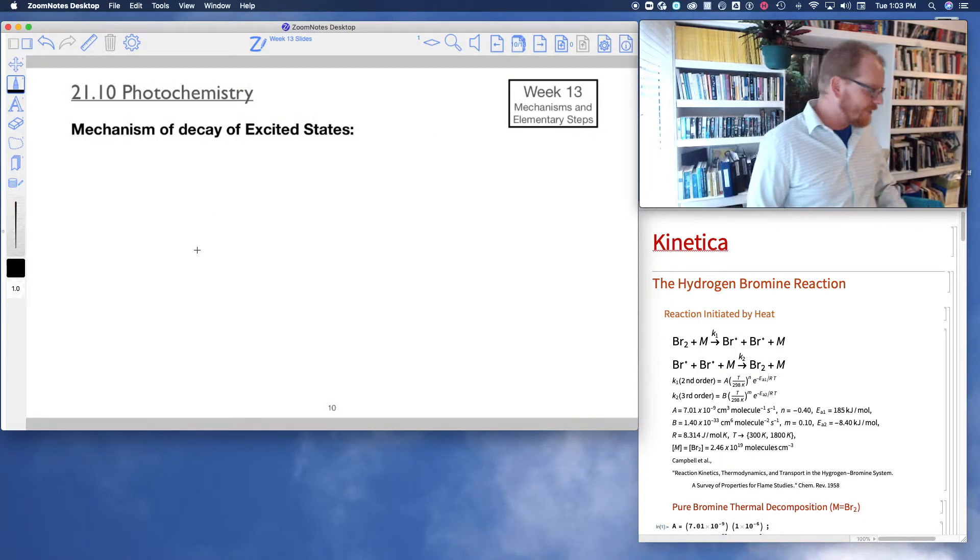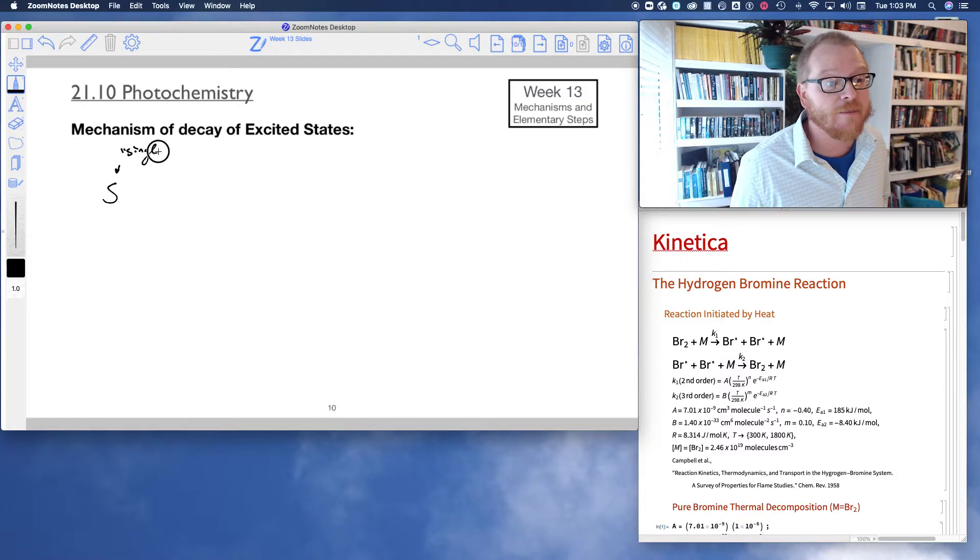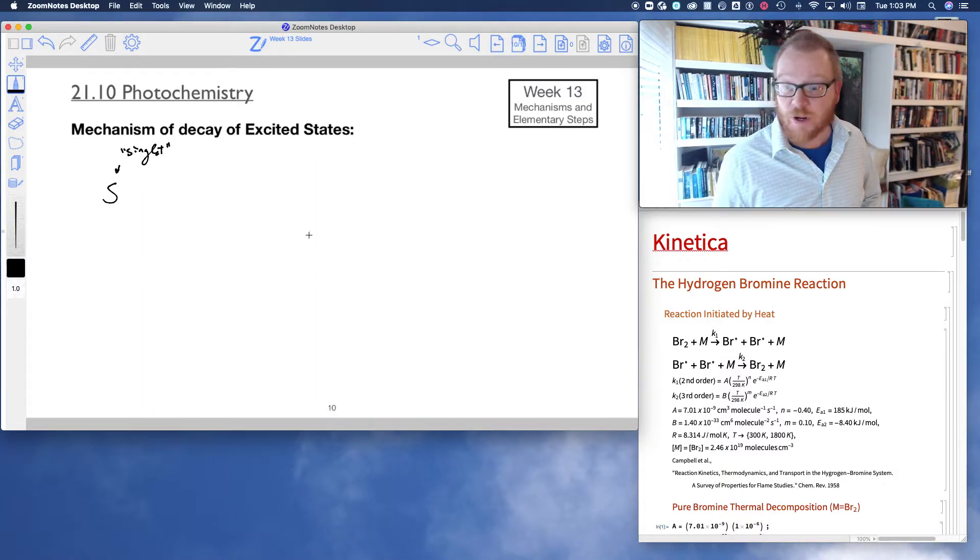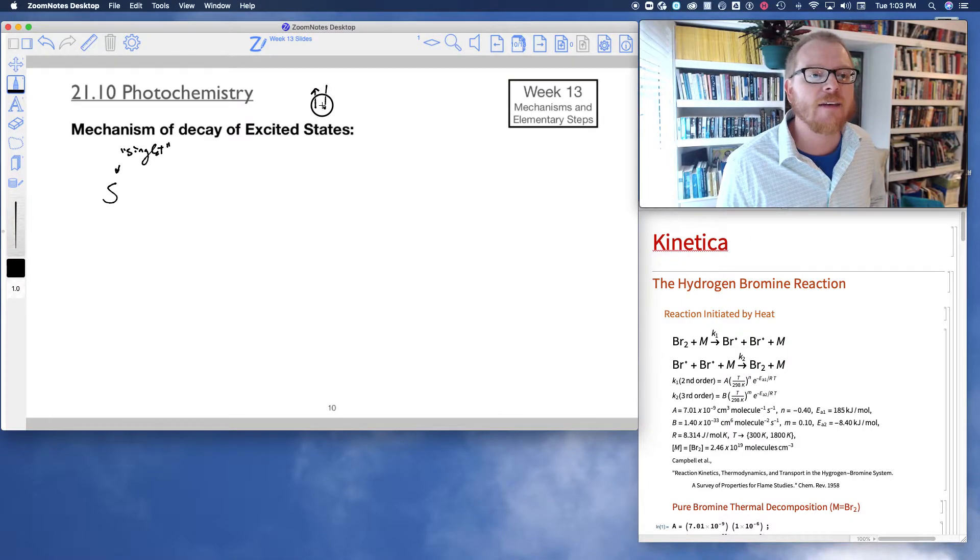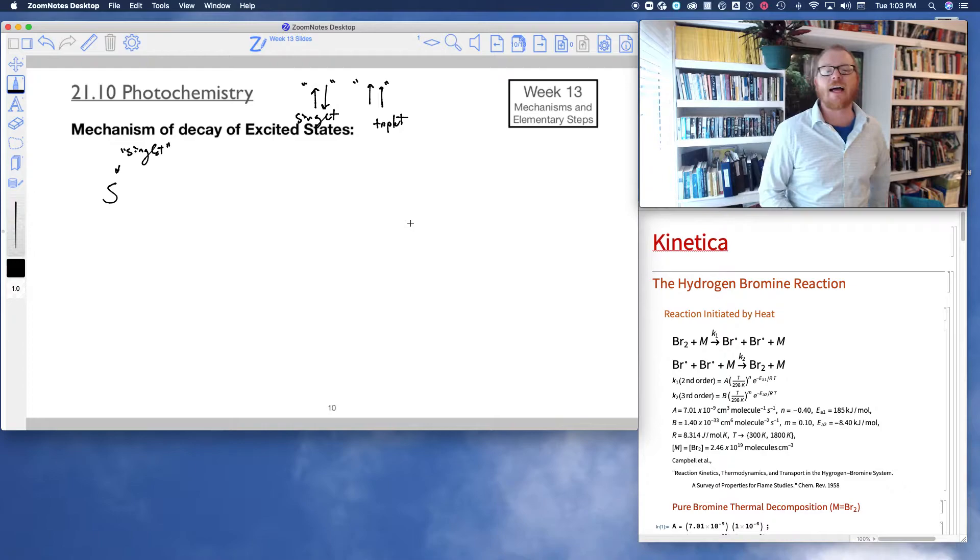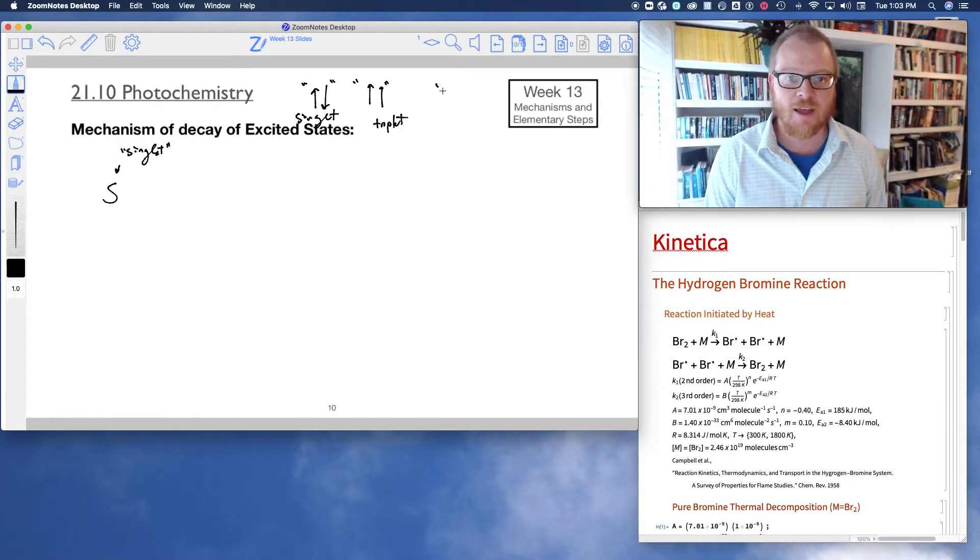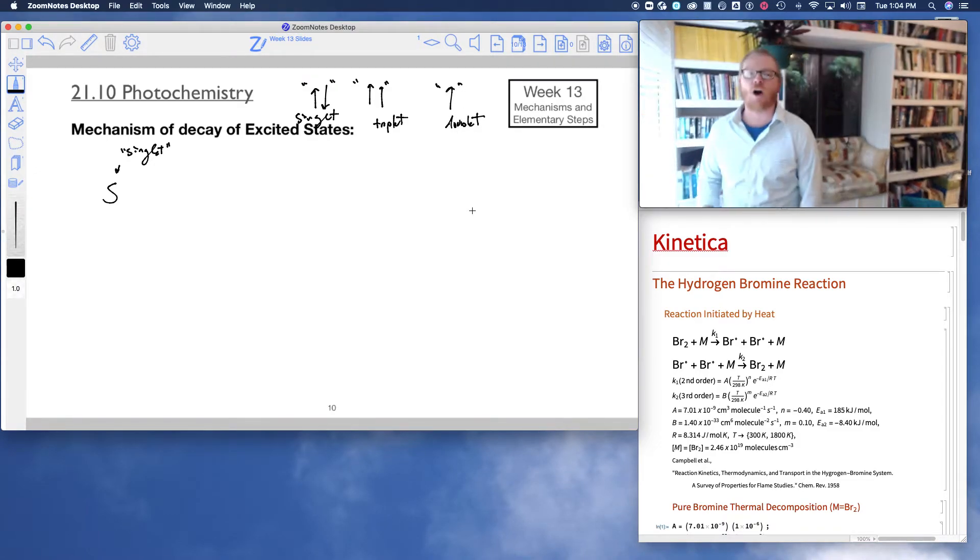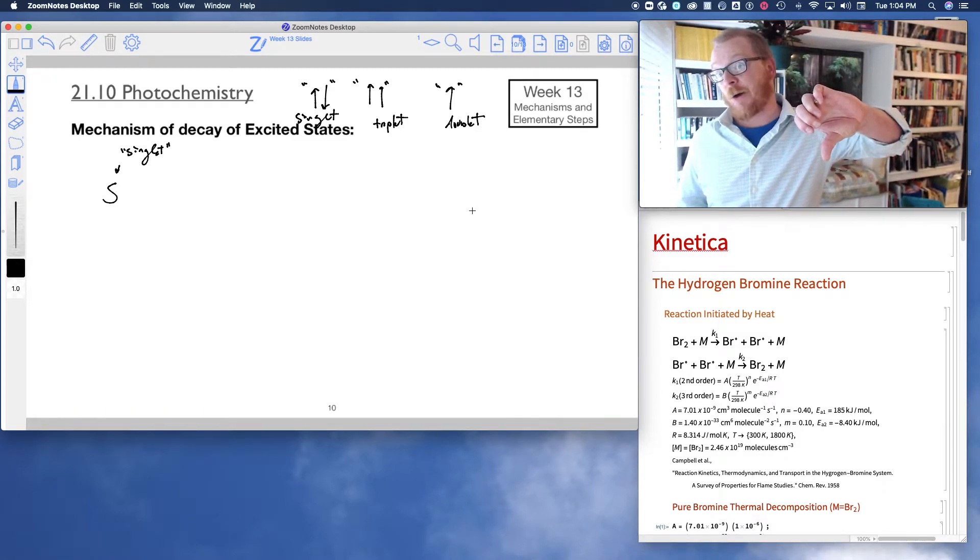So I'm going to show you a couple more things that can happen with quantum yield. So mechanisms of decay of excited states, all right? I'll use the letter S to describe a singlet state. We talked about this briefly, but just to remind you, a singlet state is an electron pair. A triplet state is an unpaired set of electrons. And actually, I forgot to describe the doublet state. The doublet state is just one single unpaired electron. It's called a doublet because it could be spin up or it could be spin down.